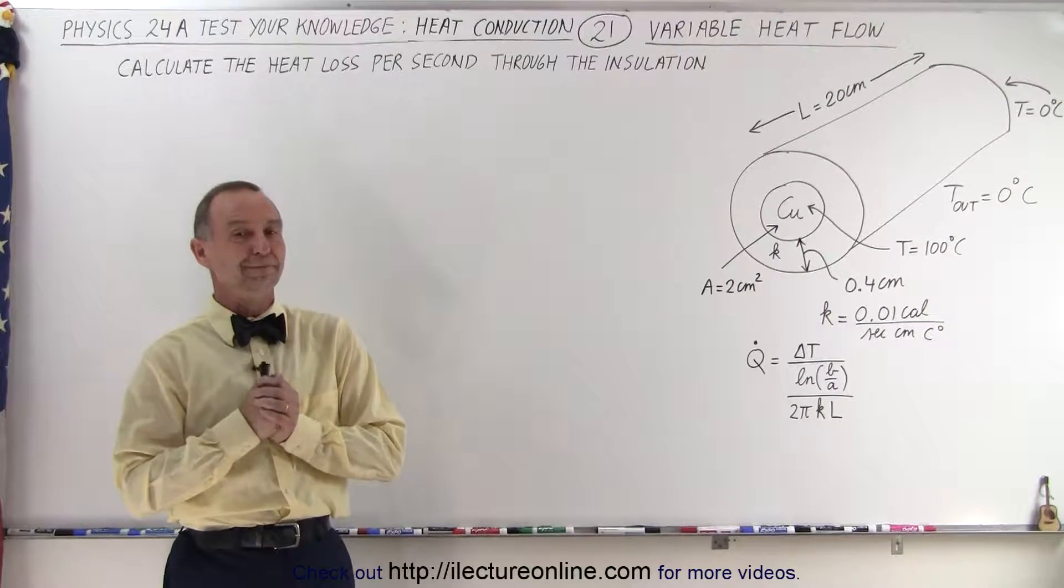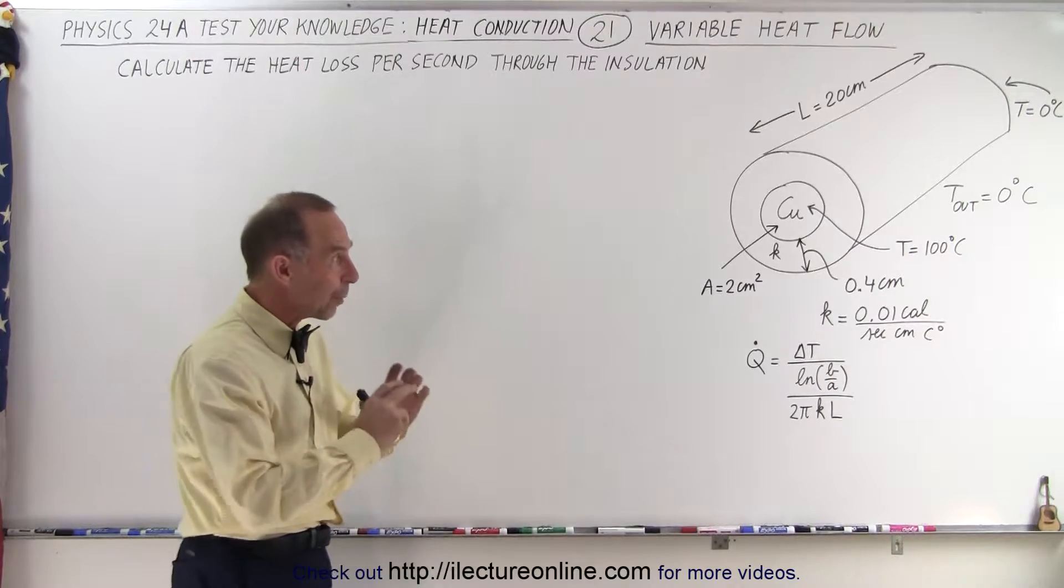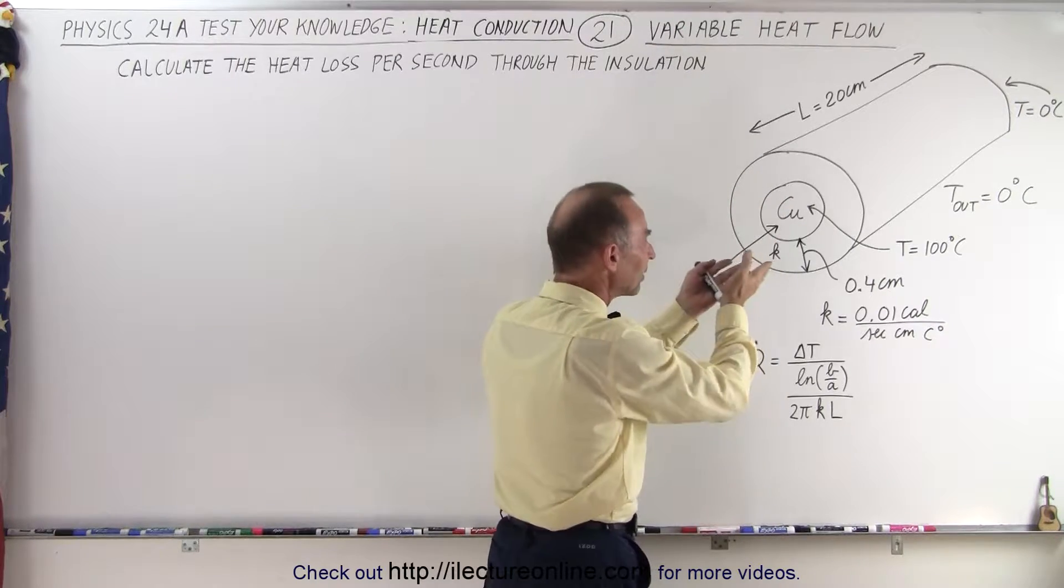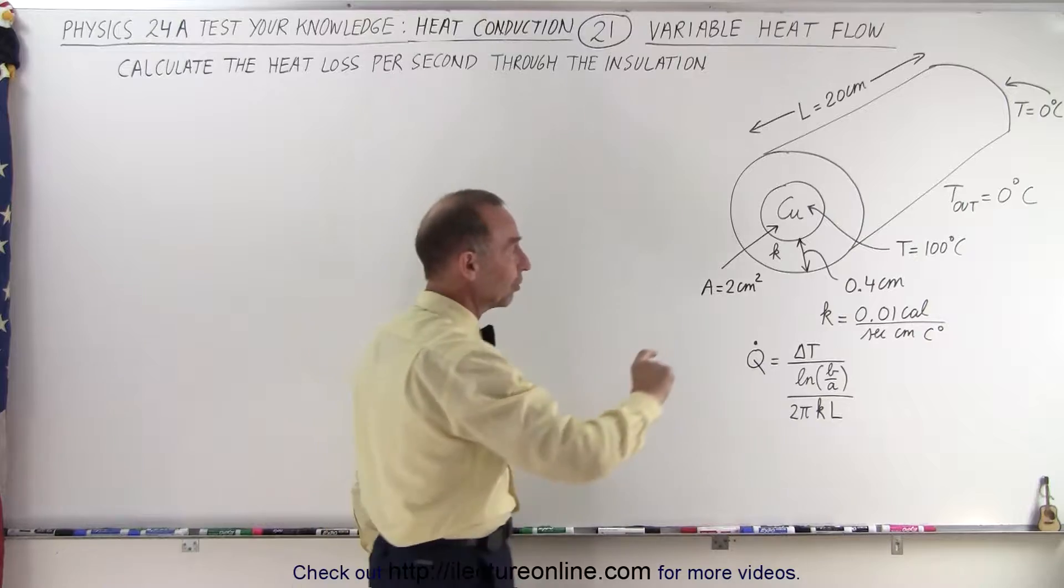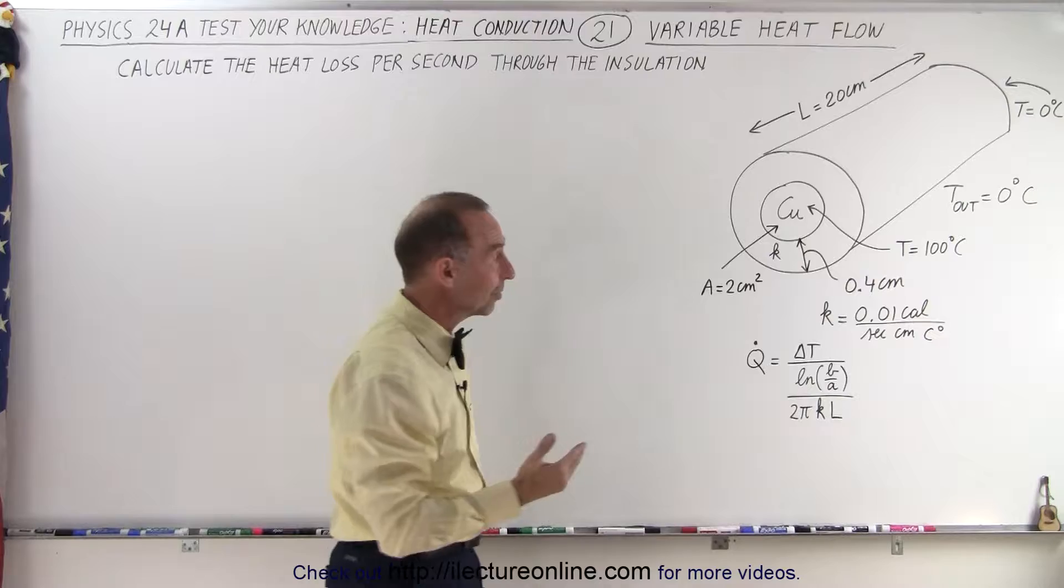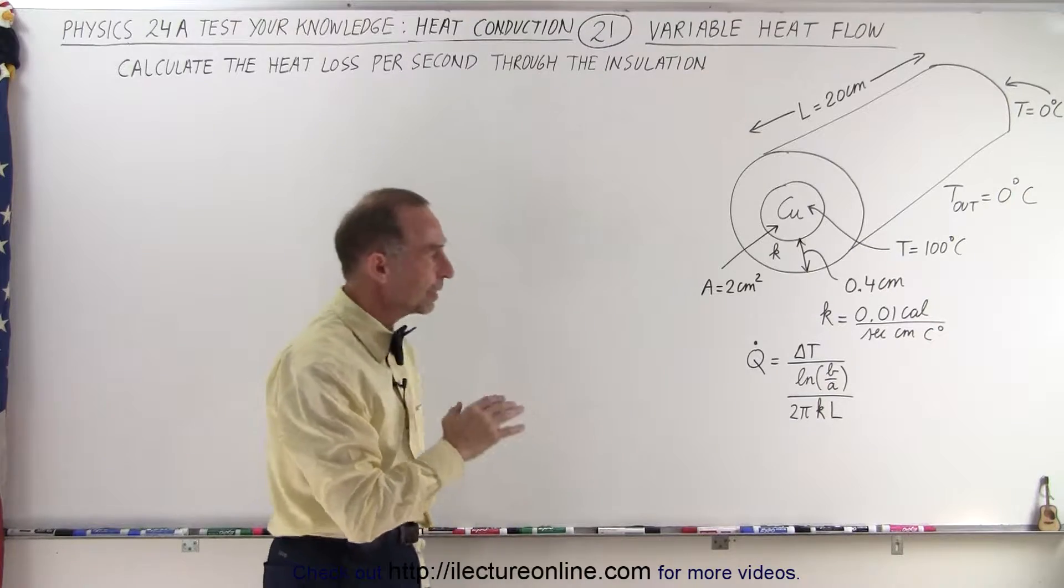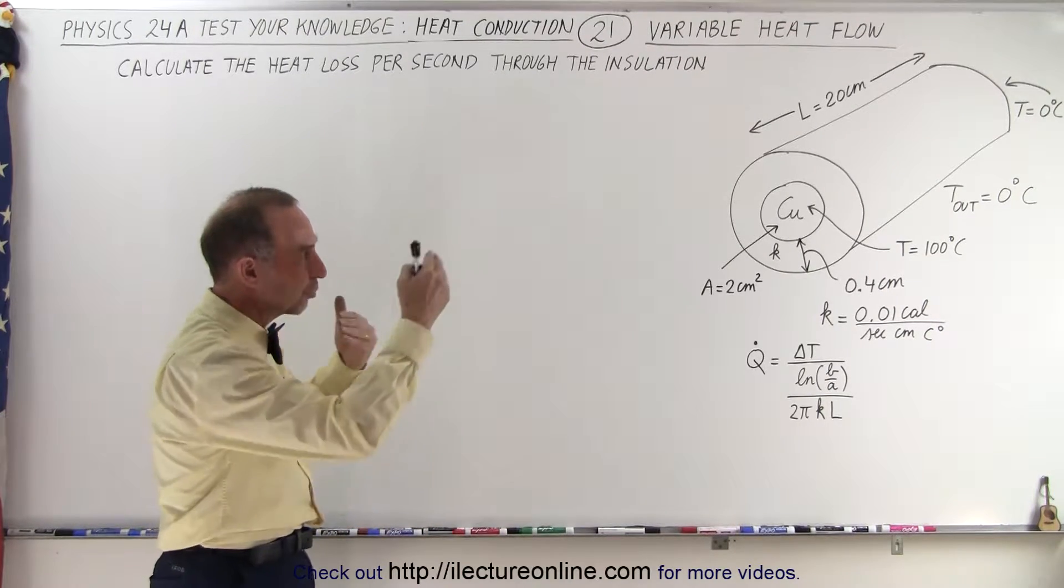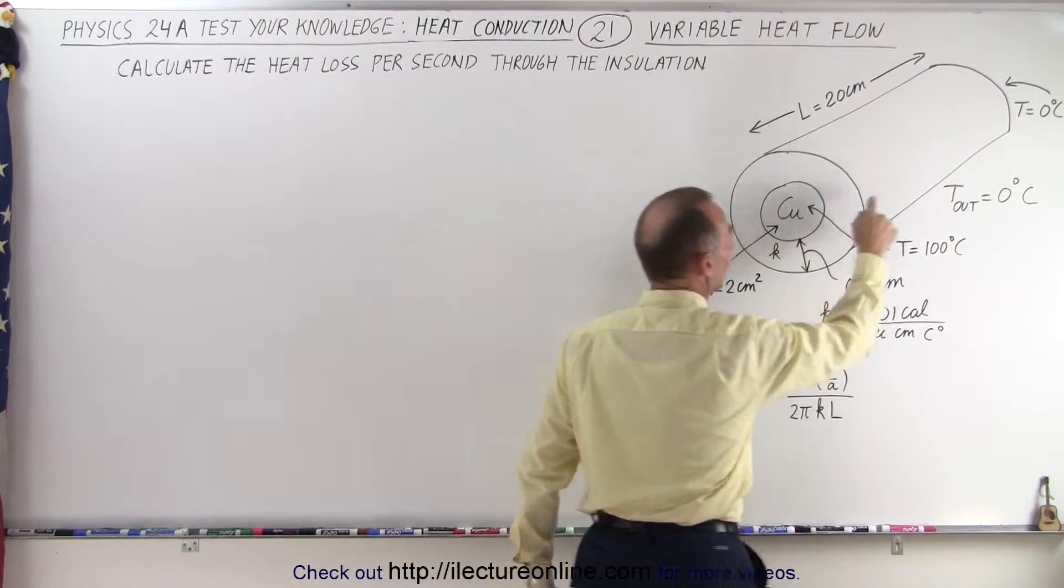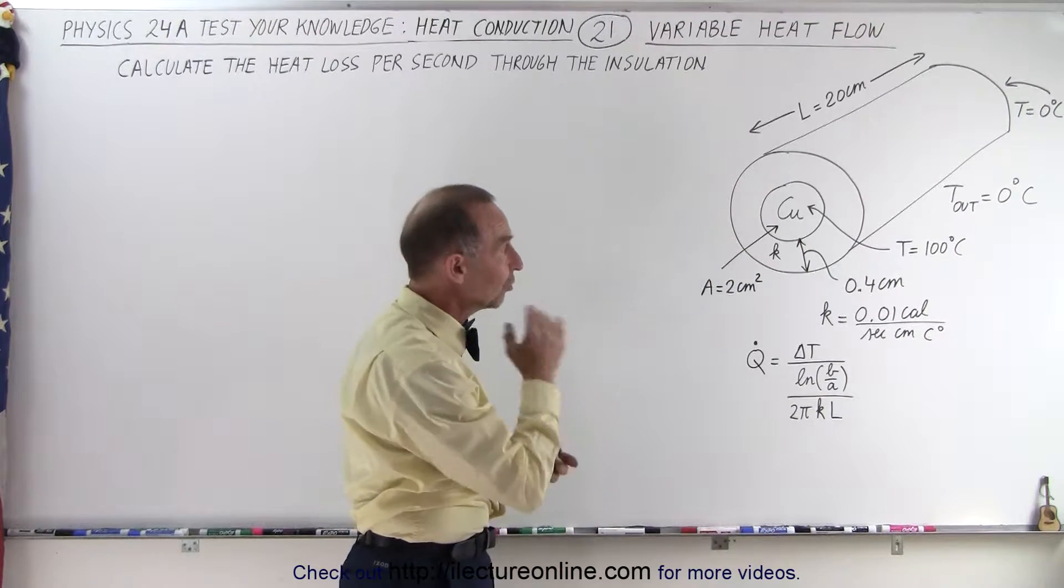Welcome to my lecture online, and now for something a little bit more challenging. Let's say that we have a copper bar that has a cross-sectional area of 2 centimeters squared which is surrounded by some insulating material. The thickness of the insulating material is 0.4 centimeters. It has a heat conductivity constant of 0.01 calories per second per centimeter per centigrade degree. Notice the bar is 20 centimeters long. On one end the bar is kept at 100 degrees centigrade. At the other end the bar is kept at 0 degrees centigrade, and the outside temperature is 0 degrees centigrade.